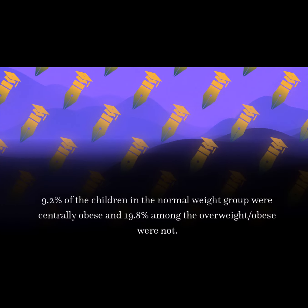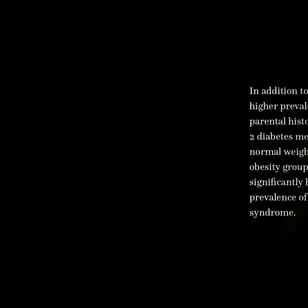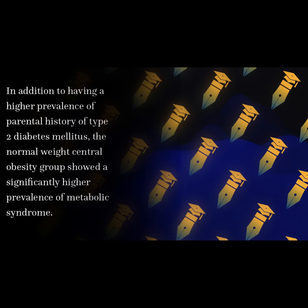9.2% of the children in the normal weight group were centrally obese, and 19.8% among the overweight/obese were not. In addition to having a higher prevalence of parental history of type 2 diabetes mellitus, the normal weight-central obesity group showed a significantly higher prevalence of metabolic syndrome.